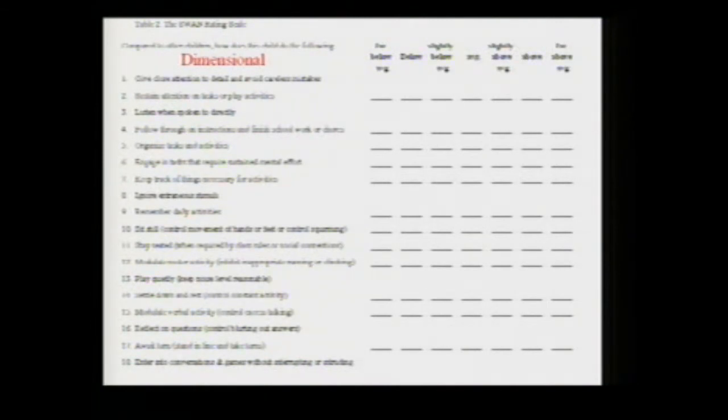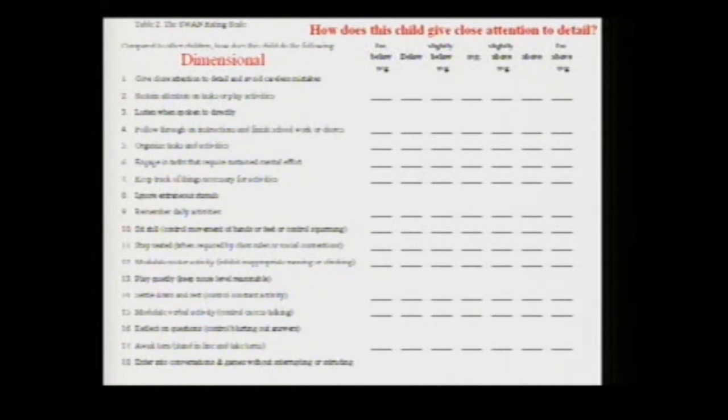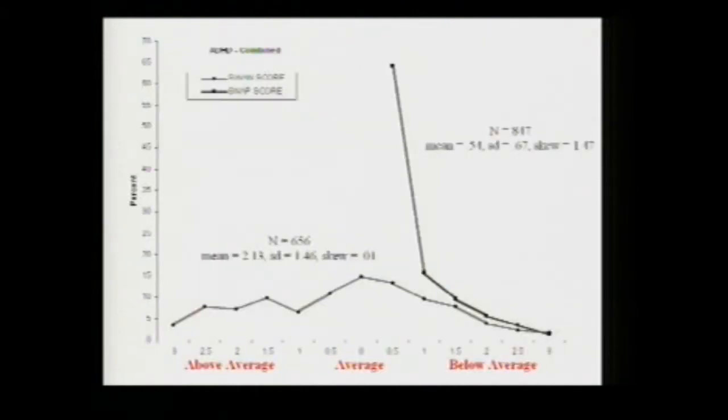This is a dimensional reformulation of the 18 items of ADHD. Instead of asking whether a child has a problem with each symptom, one asks how a symptom is manifested in the child with respect to the whole population — not just the population with impairment. So, for example, how does the child pay close attention, which might be above average or below average.